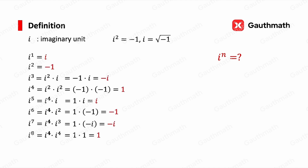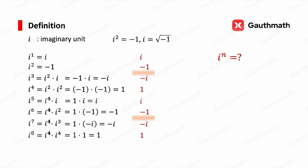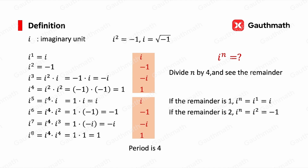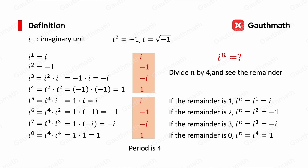Looking at the results, we notice that the pattern repeats every four terms — the period is 4. So when we compute i to the power of n, we divide n by 4 and look at the remainder. If the remainder is 1, i to the power of n equals i. If the remainder is 2, i to the power of n equals negative 1. If the remainder is 3, i to the power of n equals negative i. And if the remainder is 0, i to the power of n equals 1.